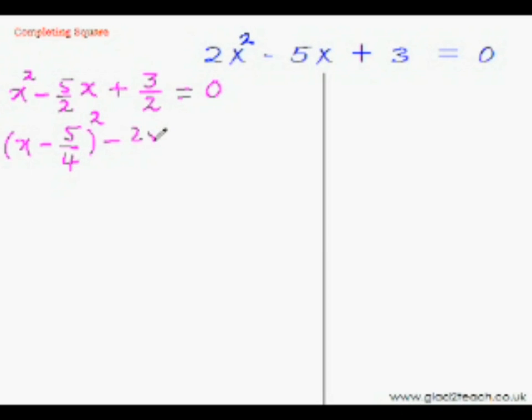So we will subtract 25 over 16 from this entire thing. And copy the remaining things as it is. So this is plus 3 over 2 equal to 0.